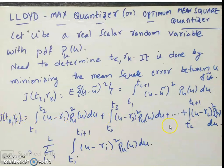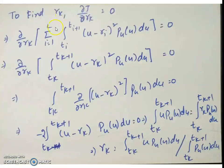J(tk, rk) is now written as a summation. Only one term in this summation depends on rk — all other terms are independent of rk. To find rk, we differentiate with respect to rk and set it equal to zero: ∂J/∂rk = 0. Out of the summation, only the term for i equal to k is dependent on rk, so we take only that term: ∂/∂rk of the integral from tk to tk+1 of (u minus rk)² pu(u) du equals zero.